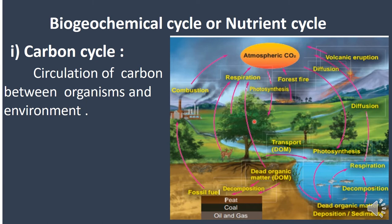Plants perform photosynthesis, and carbon dioxide is the main component used in this process. Plants utilize atmospheric carbon dioxide. That is why, regarding global warming, reducing carbon dioxide by planting more trees is important — because plants use carbon dioxide through photosynthesis.